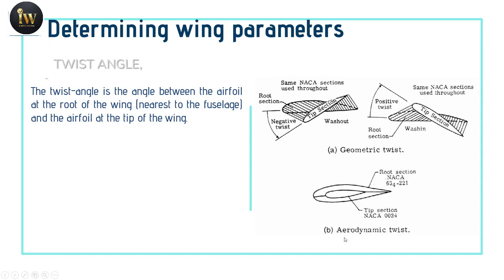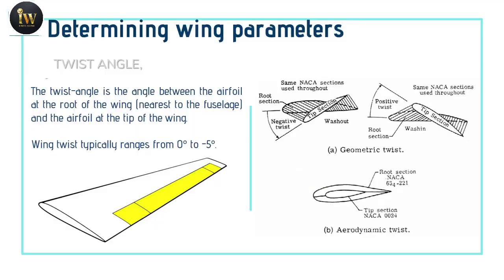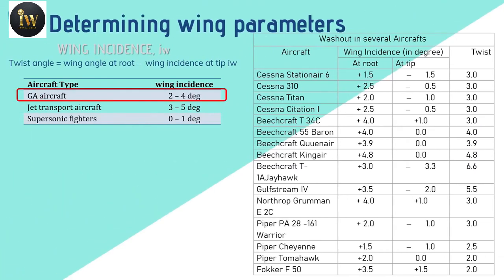Such twist is known as aerodynamic twist and it leads to wing incidence IW. So twist angle is equivalent to the wing angle at tip and the wing incidence at the root. Based on this criteria or the reference table, you can choose a proper angle of incidence for your design aircraft.